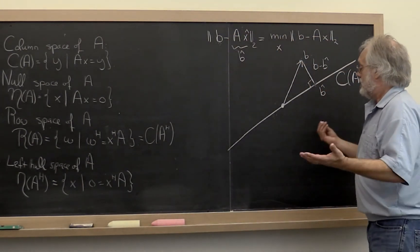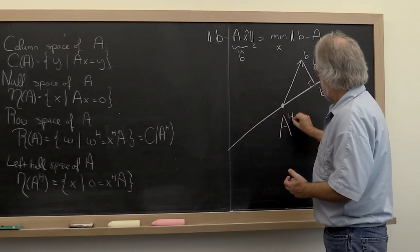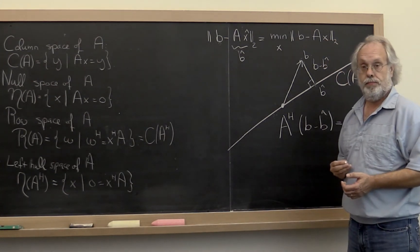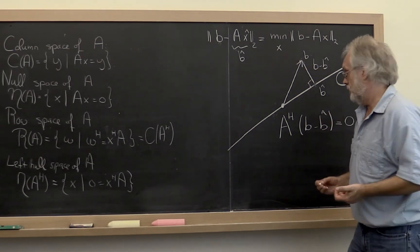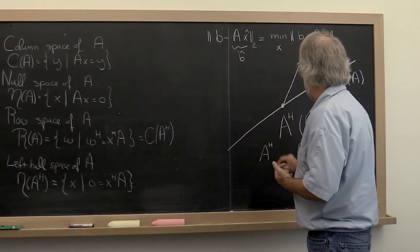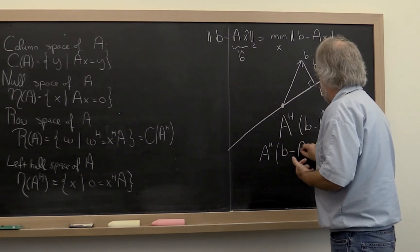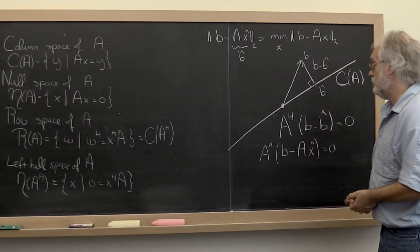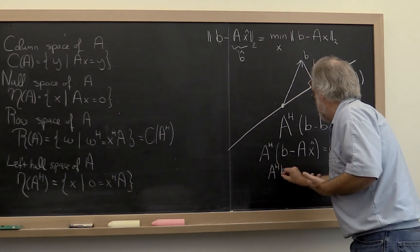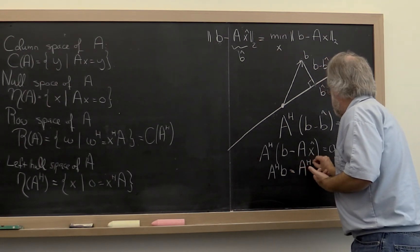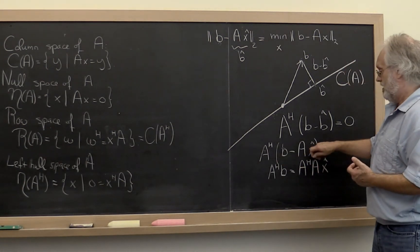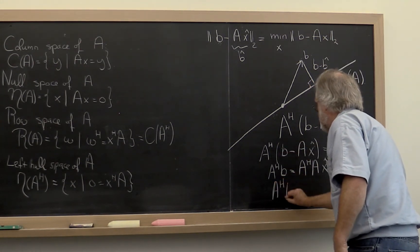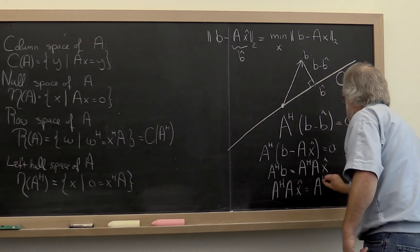So what does that mean? That means that a Hermitian transpose times the vector b minus b-hat must be equal to the zero vector. Let's manipulate this a little bit. That means that a Hermitian transpose times b minus a times x-hat is equal to zero. Let's manipulate that a little bit more. It means that a Hermitian times b must be equal to a Hermitian times a times x-hat. That's distributing this and then bringing this to the other side. And then we can switch the order of this and you find that a Hermitian a times x-hat must be equal to a Hermitian b.